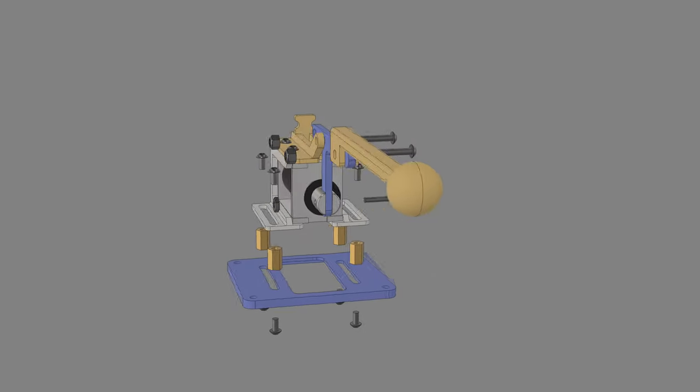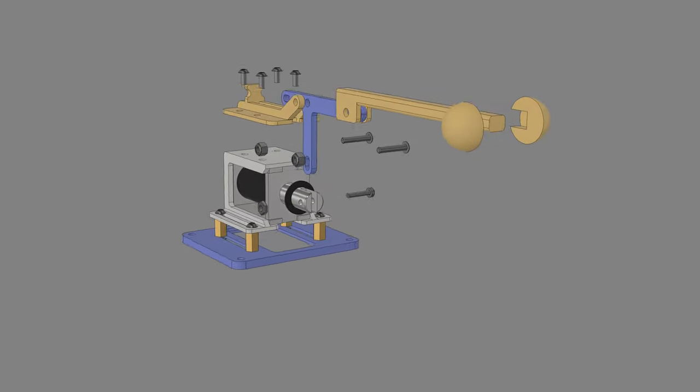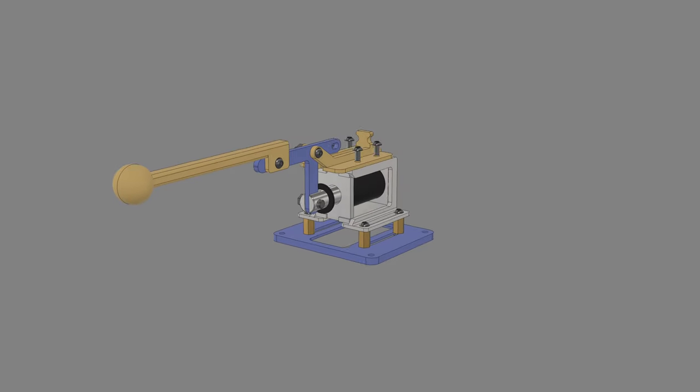The CAD assembly uses various hardware and features joints to simulate the motion of the linkage. The source is available to download so folks can remix it and use it in their builds.